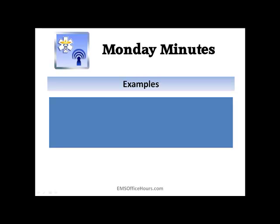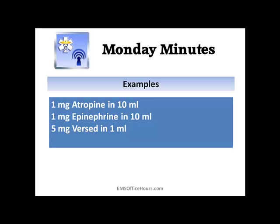Some examples of how drugs are supplied: 1 milligram of atropine usually in a 10 milliliter vial, 1 milligram of epinephrine in a 10 milliliter vial, or 5 milligrams of Versed in a 1 milliliter vial. Where you work will determine the concentration you have. It doesn't matter if you have 2 milligrams in 2 milliliters or 0.4 milligrams per milliliter in a vial — the key is knowing what you have in your supplies.